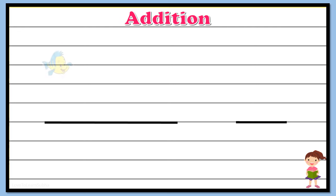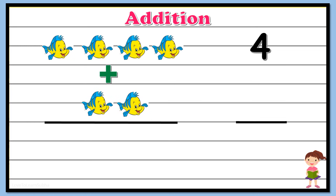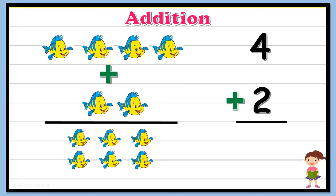Now let's take another example and start counting the objects: one, two, three, four — so here we have four fishes — plus one, two — so here we have plus two fishes. Now let's start counting the fishes again: one, two, three, four, five, six. So totally we have six fishes. Four plus two gives six.